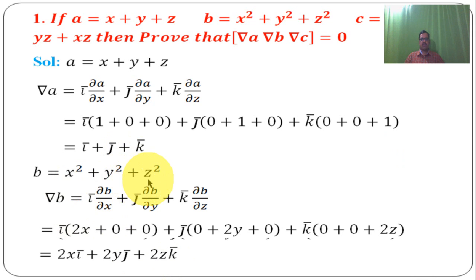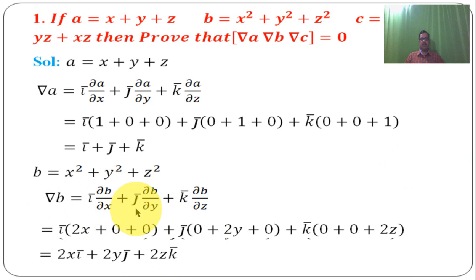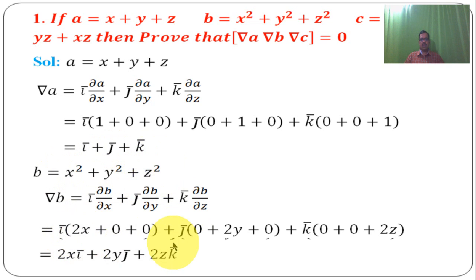Next, b = x² + y² + z². Gradient of b = ī·(∂b/∂x) + j̄·(∂b/∂y) + k̄·(∂b/∂z). So ∂b/∂x = 2x, ∂b/∂y = 2y, ∂b/∂z = 2z. Simplifying, grad b = 2x·ī + 2y·j̄ + 2z·k̄.